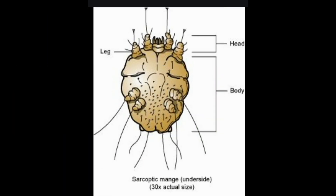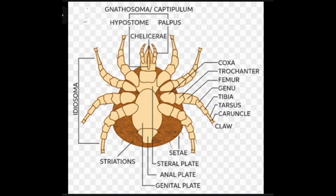What is scabies? Scabies is a skin infestation caused by a mite known as Sarcoptes scabii. Untreated, these microscopic mites can live on your skin for months. They reproduce on the surface of your skin, then burrow into it and lay eggs, causing an itchy red rash to form. There are approximately 130 million cases of scabies in the world at any given time. While it's highly contagious and can easily be passed from one person to another through direct skin contact, scabies isn't a sexually transmitted disease.